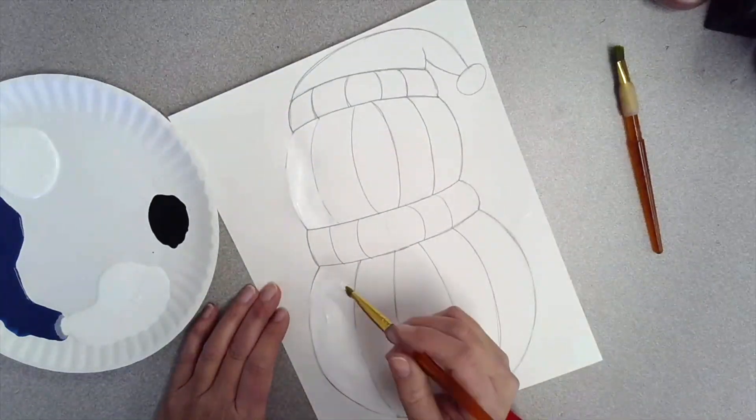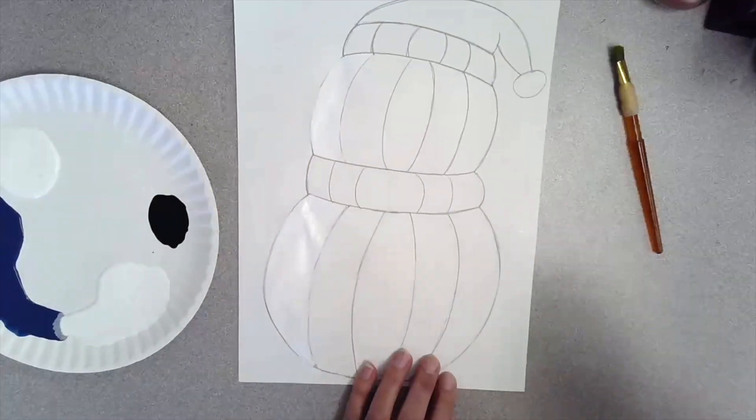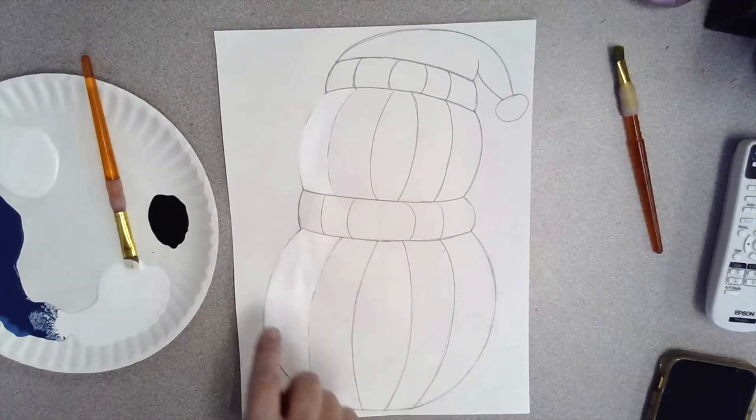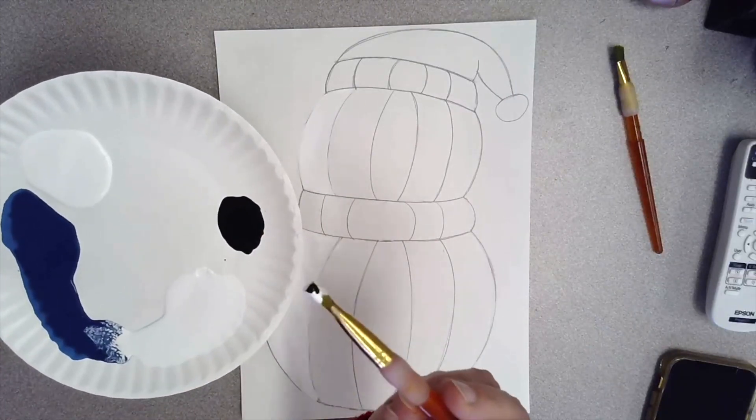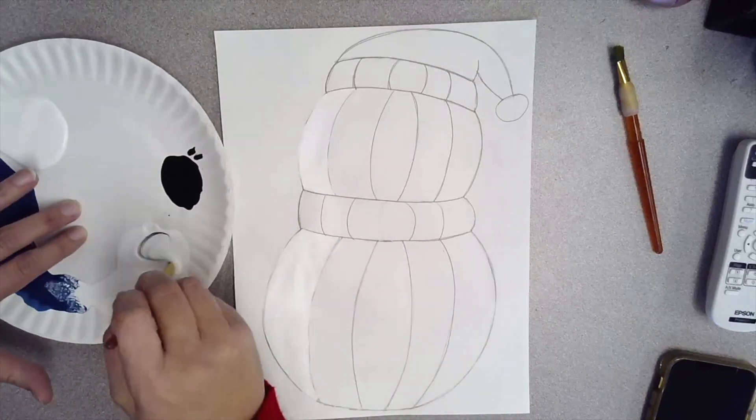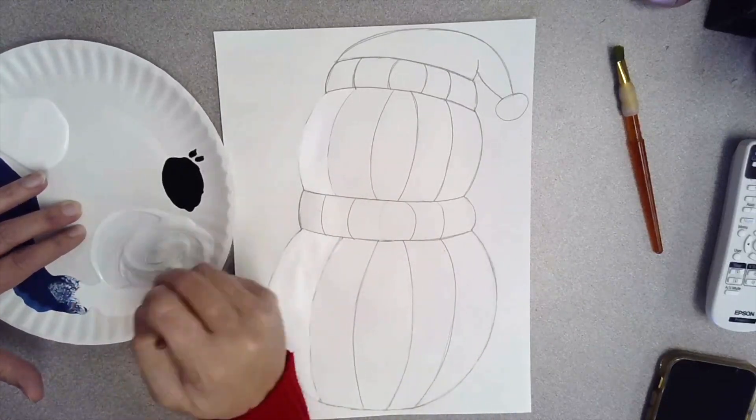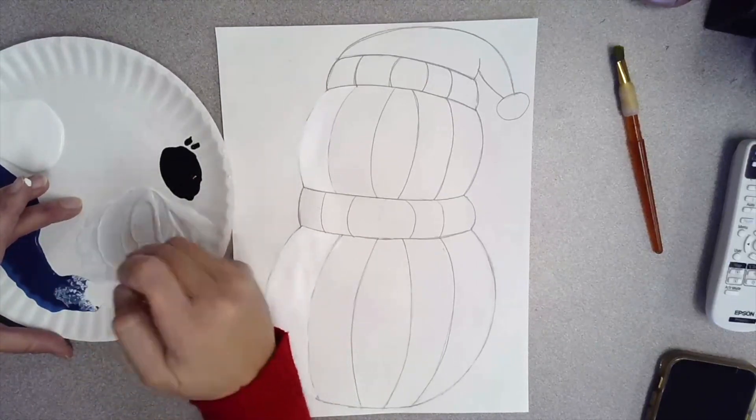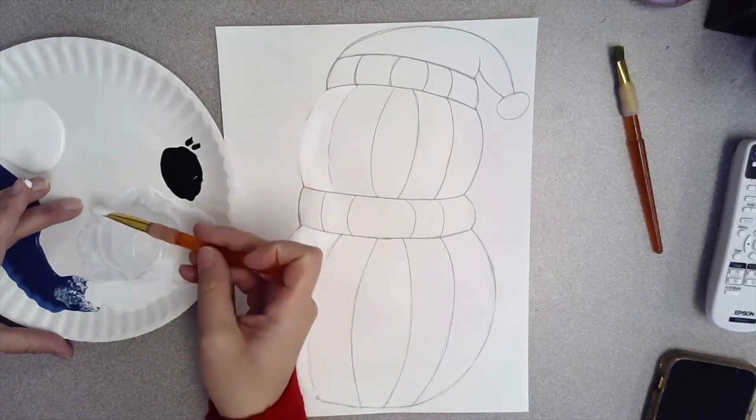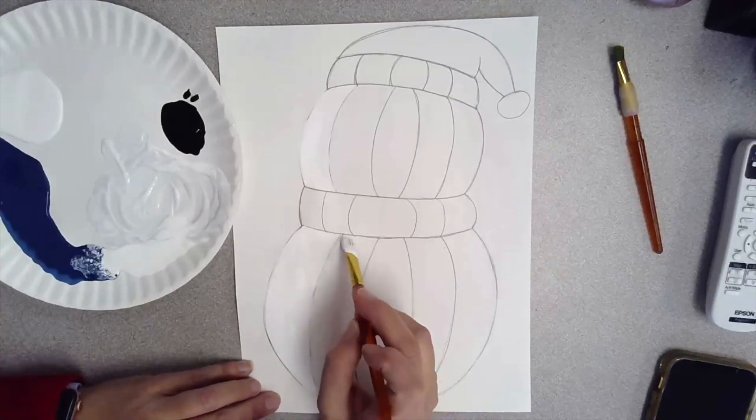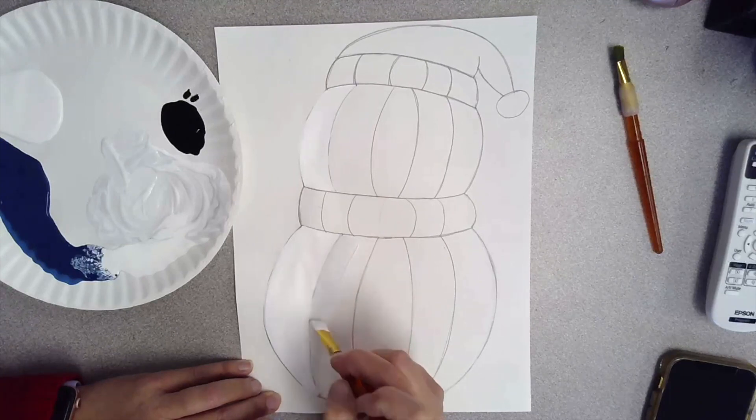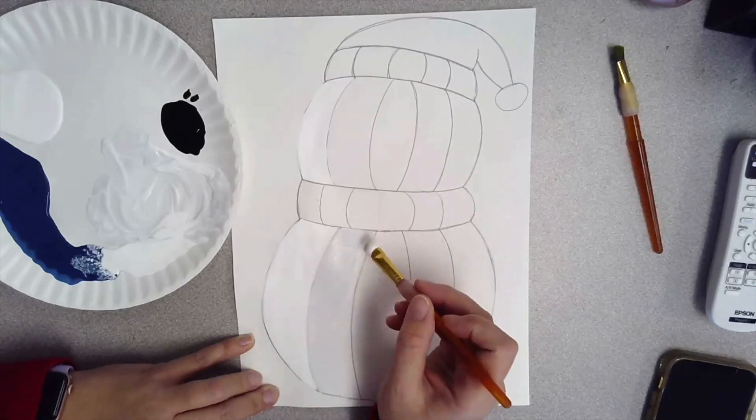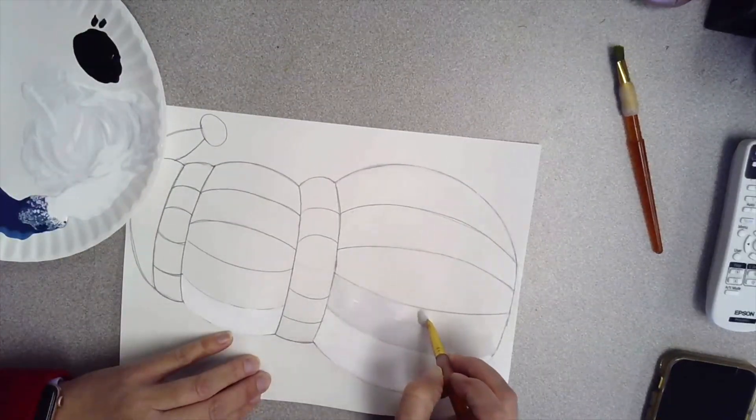Once you fill in that section all the way, the next thing you're going to do is add just the teeniest tiniest little speck of black to your white and make a gray that's barely recognizable as gray. You want to work really small with making your values on your snowman. If you make your snowman too dark too quick by adding too much of your black, it will make your snowman too dark. We want to stay as light as possible until the very end. See how you could just barely tell that that's a little bit darker than the first section? That's what we want.